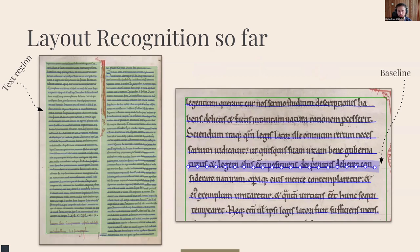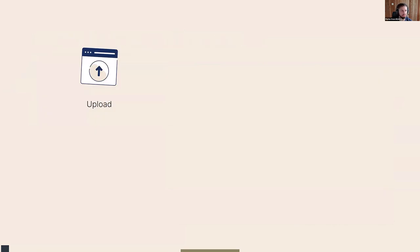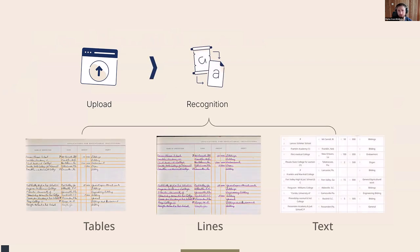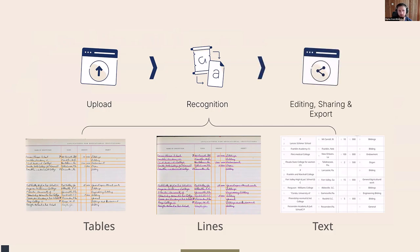Now let's look at how that works in Transkribus. The usual process until last year was to first recognize the layout and then the text — first identify where the text is on the image, then extract the text and export it. Layout recognition is a model used during text recognition in Transkribus and can be executed separately or together with text recognition. But now with table models, we add one more step: tables. We don't only want to extract lines but also the structured information of how that text is aligned on the image.